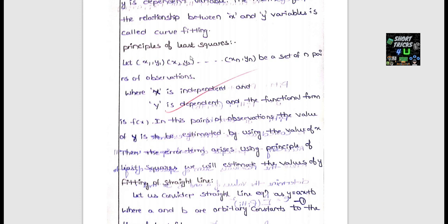We will solve problems using bivariate data points. The method used is the principle of least squares, and the 5-marks definition is very important to understand.